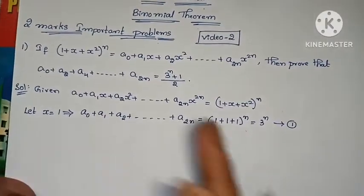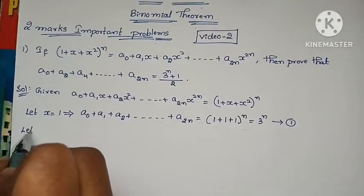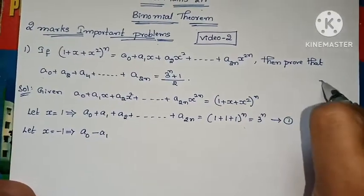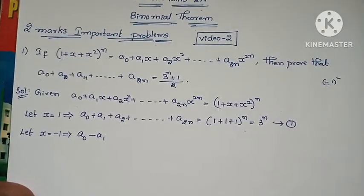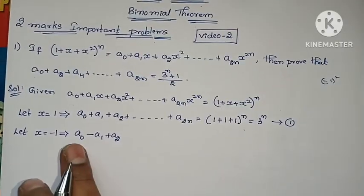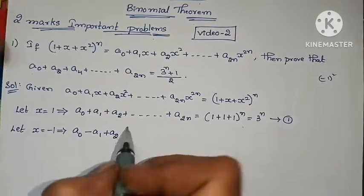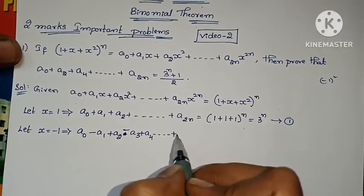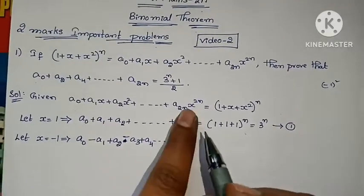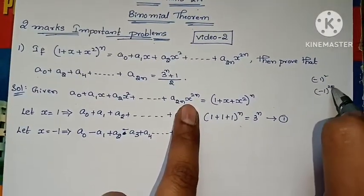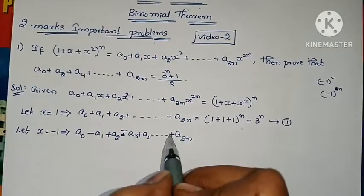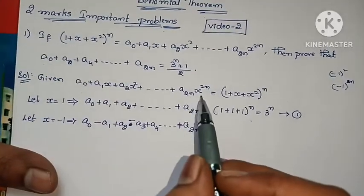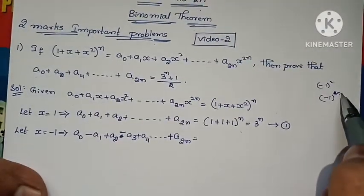Now let x = −1 and substitute. We get a₀ − a₁ + a₂ − a₃ + a₄ ... and so on. For the last term, a₂ₙ × (−1)^(2n). Since 2n is an even number, (−1)^(2n) = +1, so the last term is +a₂ₙ.